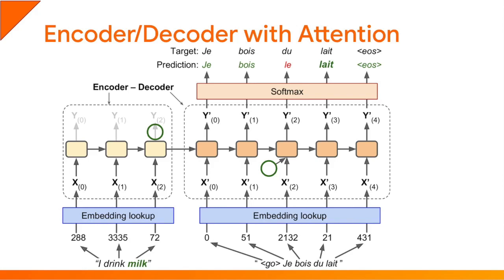When the decoder is about to produce the next word, the attention mechanism feeds it the appropriate encoder output corresponding to the word it should translate now. The attention mechanism provides a much more direct path from an input word to its translation, allowing it to handle much longer sentences. The attention mechanism looks at every single encoder output and gives each one an alignment score — for example, 0.1 for the first word, 0.2 for the second, and 0.7 for the third. The scores add up to 1, and what actually gets fed to the decoder is the weighted sum of the encoder's outputs.